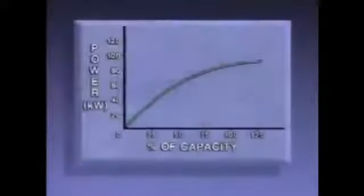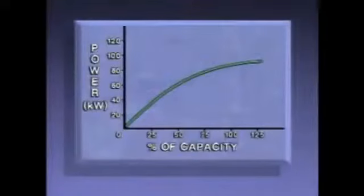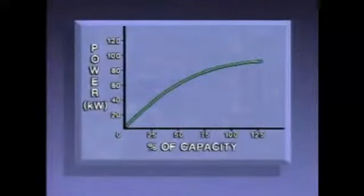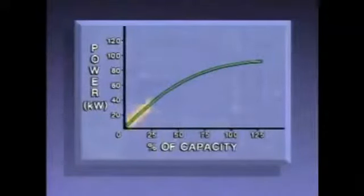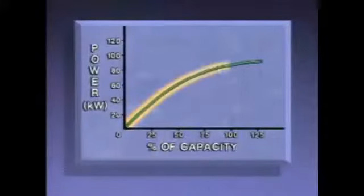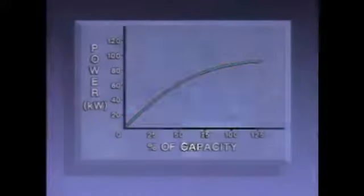Another type of curve, the power curve, shows how much electrical power a manufacturer expects will be used to operate a pump at given flow rates under normal conditions. We can see that this pump requires low power at a low flow rate. As the flow increases, the power needed also increases.